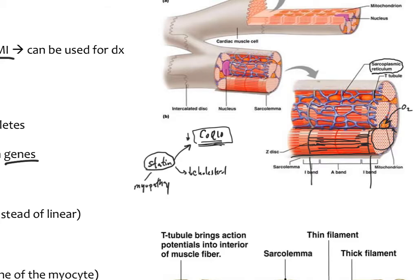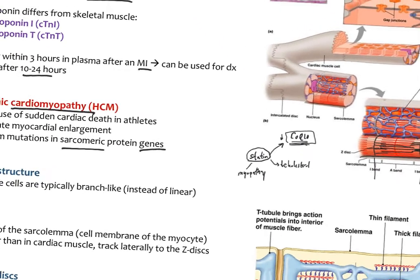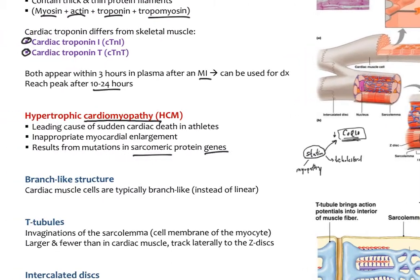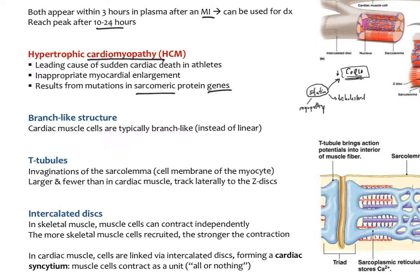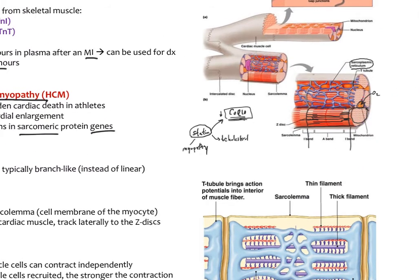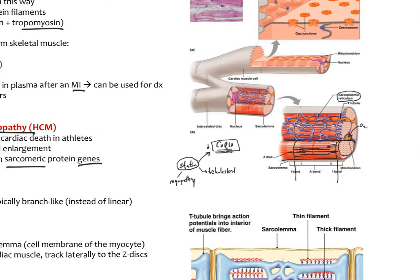So that's the striations and the actin, myosin, troponin, and tropomyosin within the cardiac myocytes. Another unique feature of cardiac myocytes is that unlike skeletal muscle, where all the cells are ranged parallel to one another, cardiac myocytes have more of a branch-like structure. Here is one muscle cell, and then here is another muscle cell — they're not next to one another but rather branched.